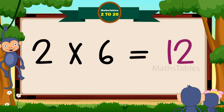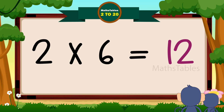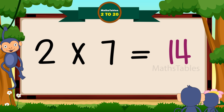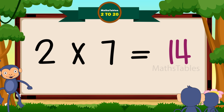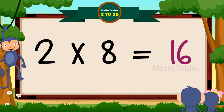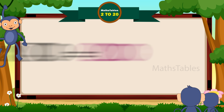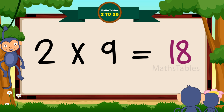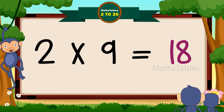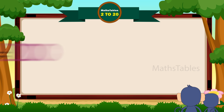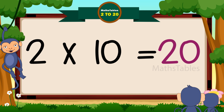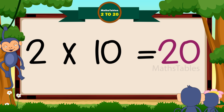Two sixes are twelve. Two sevens are fourteen. Two sevens are fourteen. Two eights are sixteen. Two eights are sixteen. Two nines are eighteen. Two nines are eighteen. Two tens are twenty. Two tens are twenty.